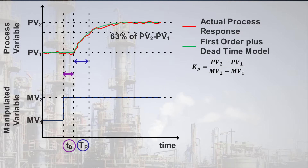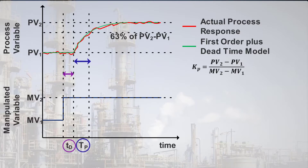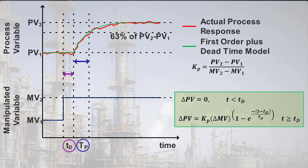The time constant, T sub P, is the time it takes the response to move 63%, or 1 minus e to the negative 1, of the way to steady-state — that is, it is the time constant of a first-order dynamic response. This is called a first-order plus dead-time dynamic model, which can approximate just about any actual dynamics that you will encounter in a real process.